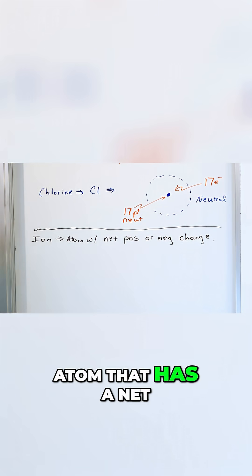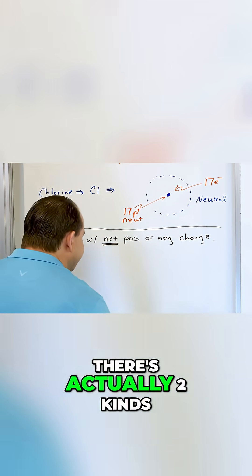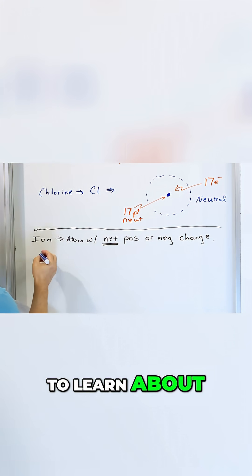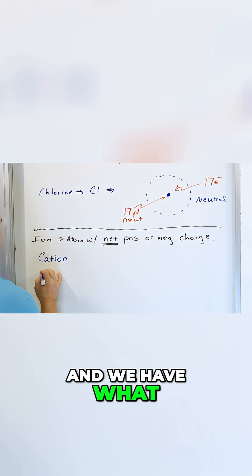An ion is an atom that has a net—I'm going to underline net—positive or negative charge. There's actually two kinds of ions we're going to learn about. We have what we call a cation, and we have what we call an anion.